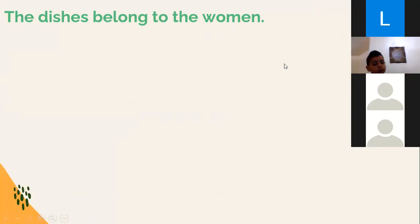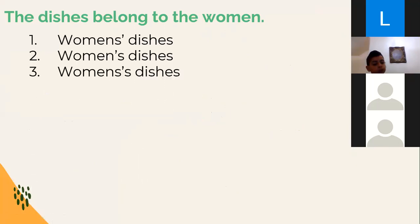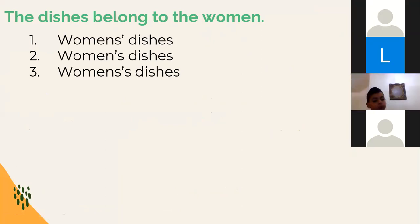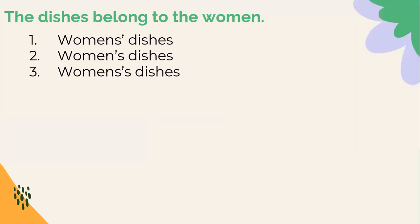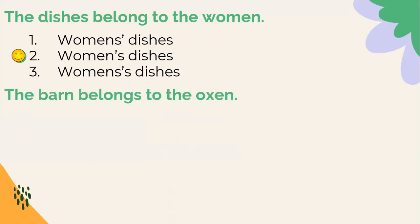Let's practice the irregular plural possessive. The dishes belong to the women. How do I form the possessive here? 'Women' is an irregular plural — there is more than one woman, but 'women' doesn't have S at the end. So we add apostrophe then S: 'the women's dishes.' It takes apostrophe then S because it's an irregular plural noun that doesn't have S at the end. That's number two — the correct answer.